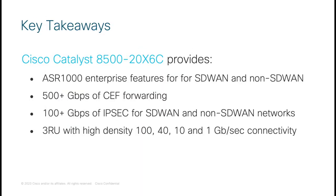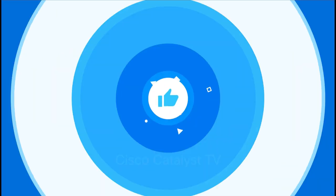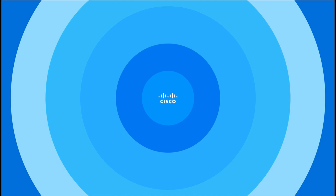Thank you for spending the time today to go through this tour of the Catalyst 8500 20X6C routing platform. The key takeaways are: the Catalyst 8500 20X6C provides all the enterprise routing features of the ASR1000 platforms brought forward for SD-WAN and non-SD-WAN networking; the platform delivers 500+ Gbps of CEF forwarding and 100+ Gbps of IPSec forwarding for SD-WAN and non-SD-WAN networks; and it provides efficient use of rack space with high-density 100, 40, 10, and 1 gigabit per second Ethernet connectivity. I hope this session has been informative and useful in your consideration of the platform.